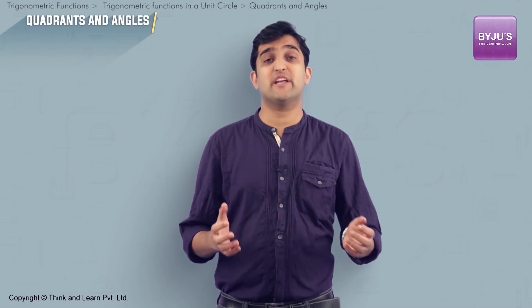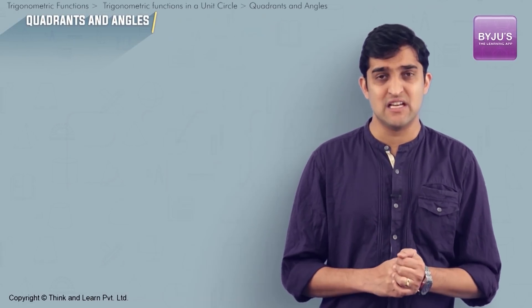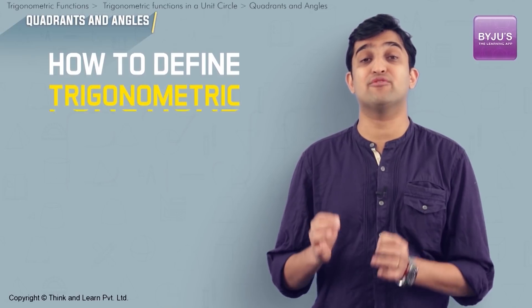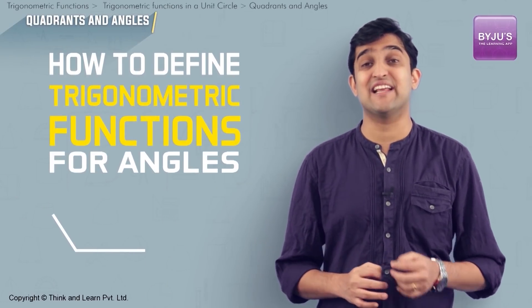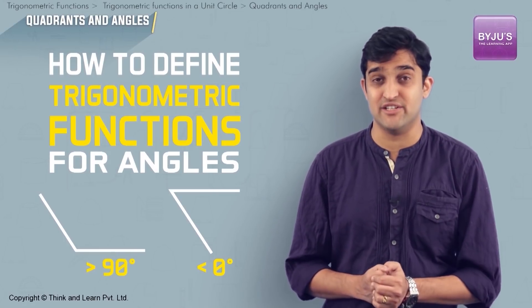Until now we have talked about trigonometric functions for acute angles, but what happens if we have an angle greater than 90 degrees or less than 0 degrees? How do we define trigonometric functions for angles greater than 90 or less than 0? Let's explore this section now.